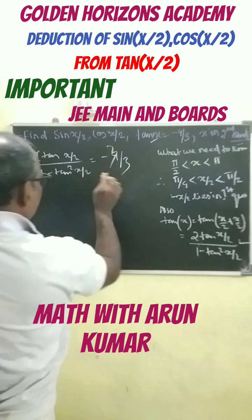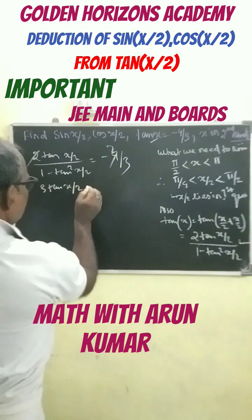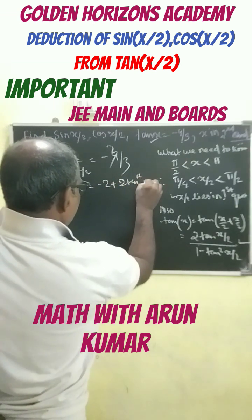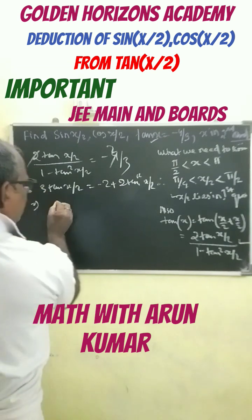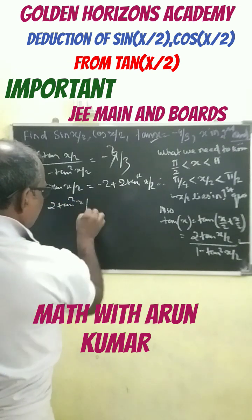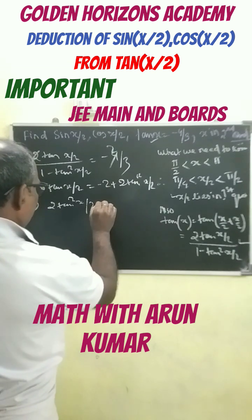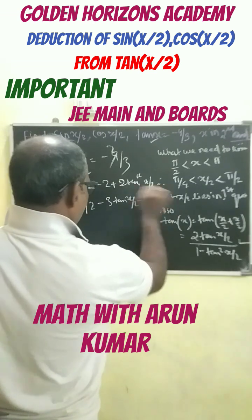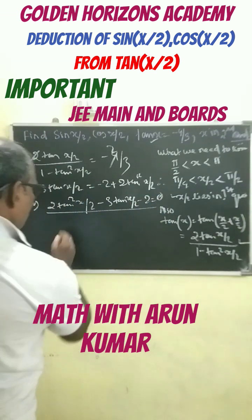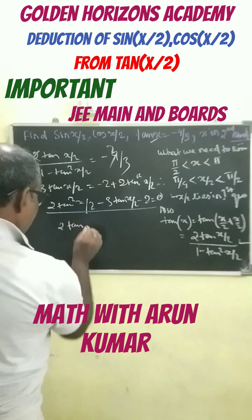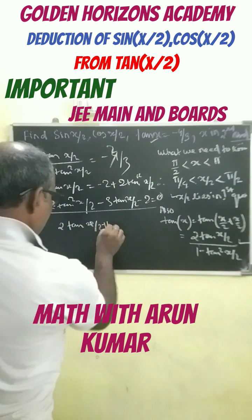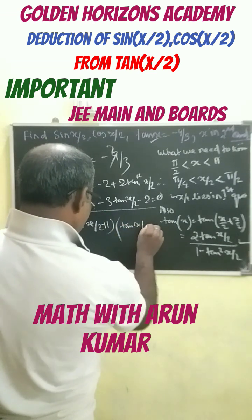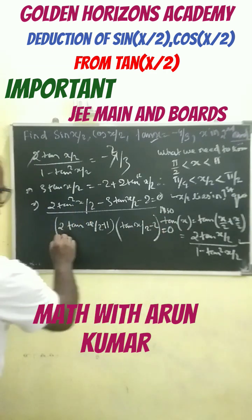Cross-multiplying and simplifying, we get 3tan(x/2) equals minus 2 plus 2tan²(x/2), which rearranges to 2tan²(x/2) minus 3tan(x/2) minus 2 equals 0. This quadratic factors as (2tan(x/2) + 1)(tan(x/2) - 2) equals 0.